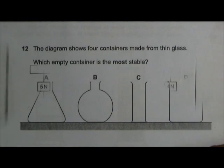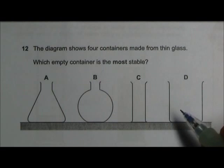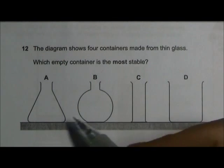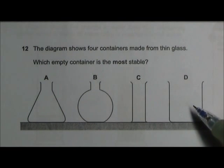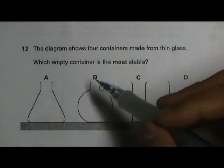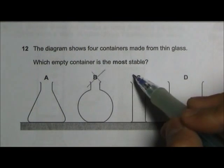To determine which container is the most stable, we first look at the base area. We see that A and D, they have a larger base area compared to B and C. So we can straight away eliminate these 2 options.